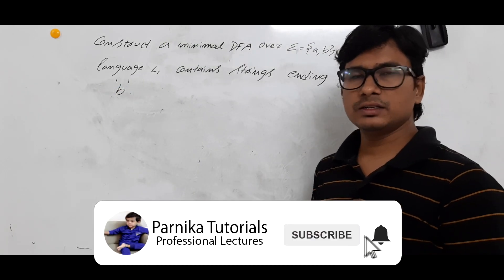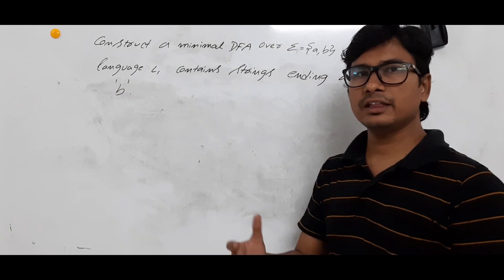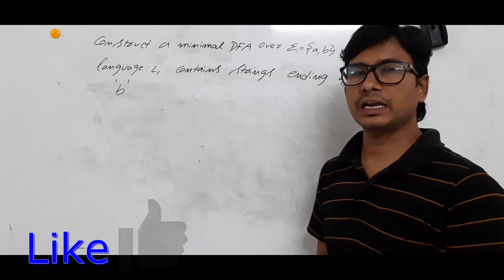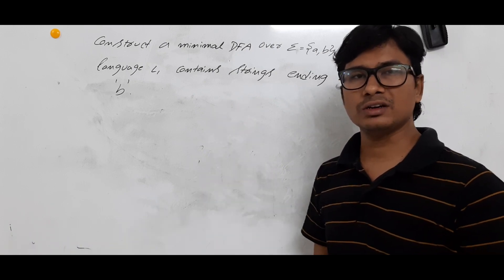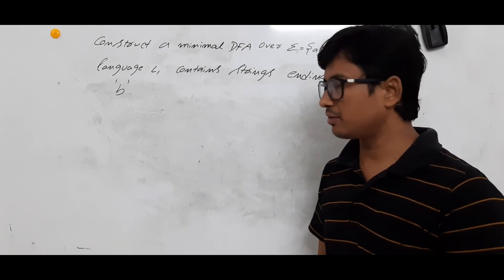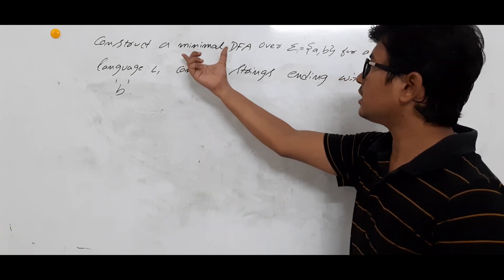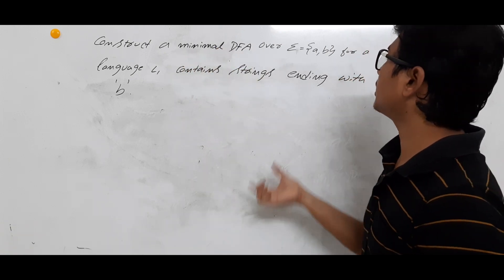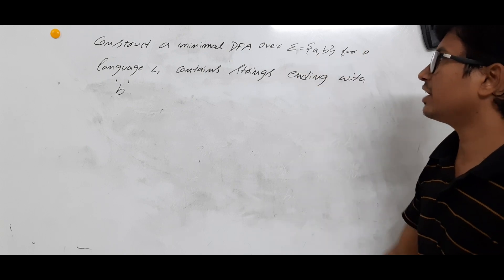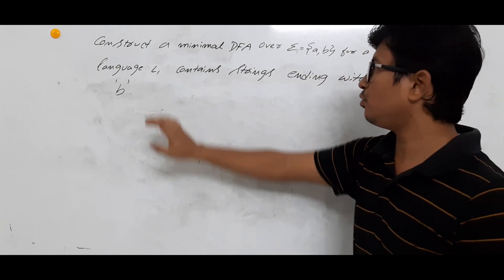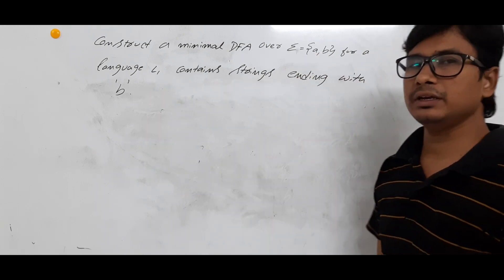Good morning friends. In this video we will discuss another example for constructing the minimal DFA so that you will understand the concept in a better way. Let me read out the question: Construct a minimal DFA over alphabets A and B for language L1 which contains strings ending with B.